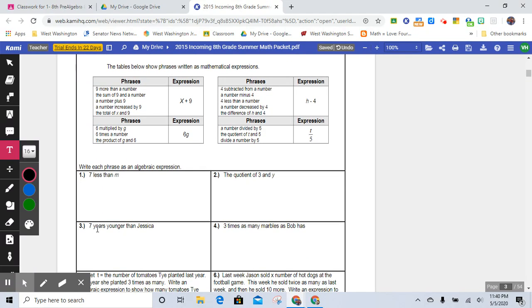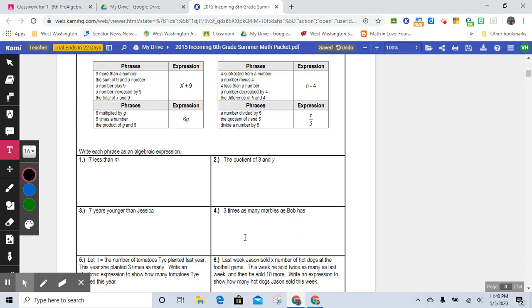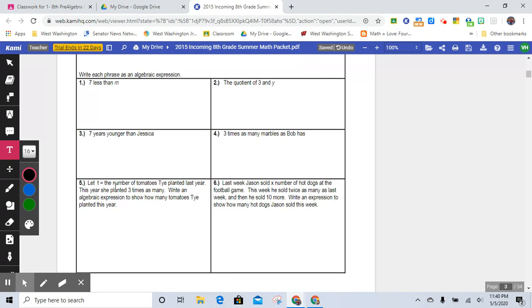Quotient, okay, here's that younger thing, all right. Something about marbles. T is tomatoes that Tai planted last year. This year she planted three times as many. Okay, so then write an algebraic expression. Remember, expression does not have an equal sign. Equations do.